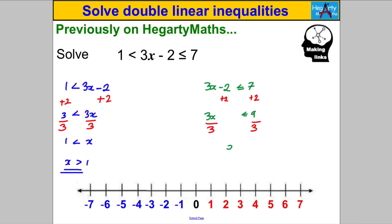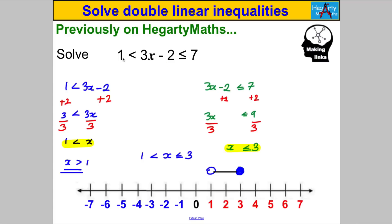Therefore X is less than or equal to 3. Looking at it with X on that side, I can combine those inequalities by putting X in the middle: X is less than or equal to 3 but bigger than 1. On the number line, one point is open and the other is filled in.